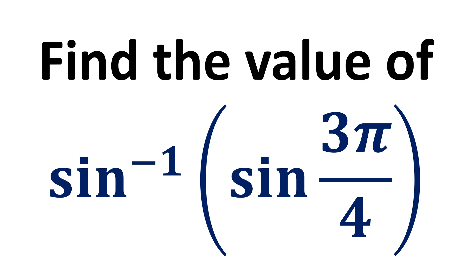In this video, we learn to find the value of inverse of sine of sine of 3 times pi upon 4. As per the properties of inverse function, inverse of sine of sine of 3 times pi upon 4 is equal to 3 times pi upon 4.